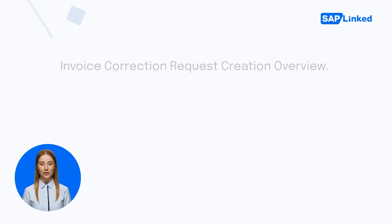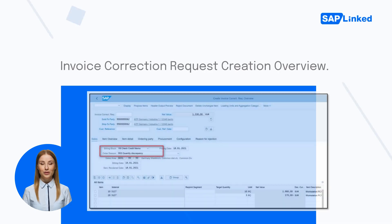First, change the debit item quantity. A billing block is automatically applied in this case. Enter an order reason in the Sales tab and save it.